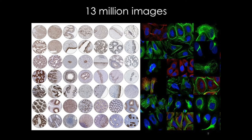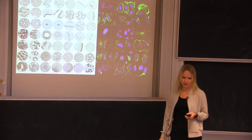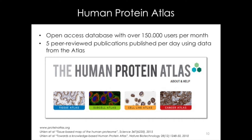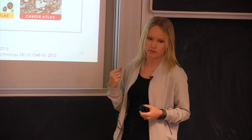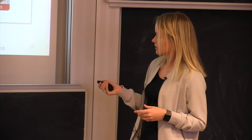All in all in the protein atlas we have 13 million images like this, and all are annotated manually by pathologists or cell biologists. So I think that this is one of the largest annotated data sets around, and it's a very good data set if you want to do, for example, deep learning. What we do with these images when we've annotated them is that we assemble all the images and our interpretations of the images into a publicly available database, the protein atlas. It's open access. We have about 150,000 users on a monthly basis, and we see about five peer-reviewed publications using data from the atlas every day.